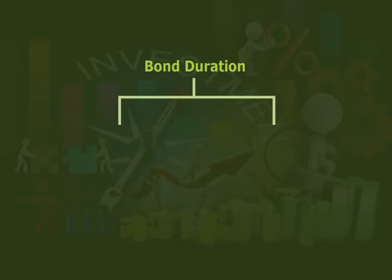The next topic is bond duration. The term duration is related to time with respect to bonds — it measures how long in years it takes for the price of a bond to be repaid by its internal cash flows. It is very important for investors to measure, as it considers that a higher duration bond carries more risk and is more volatile than bonds with lower duration. There are two basic types of bonds: zero coupon bonds and vanilla bonds.